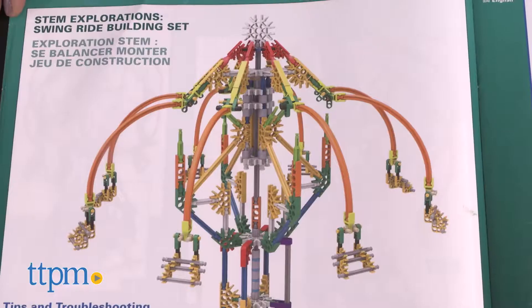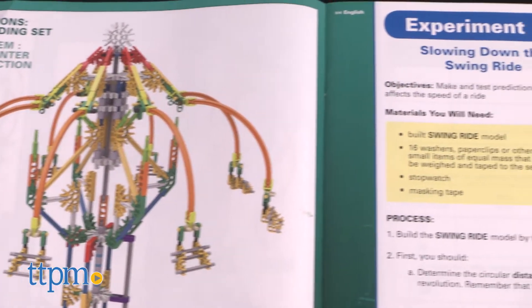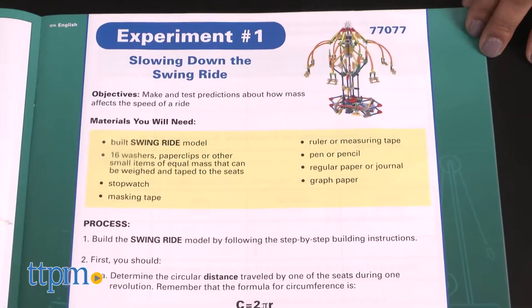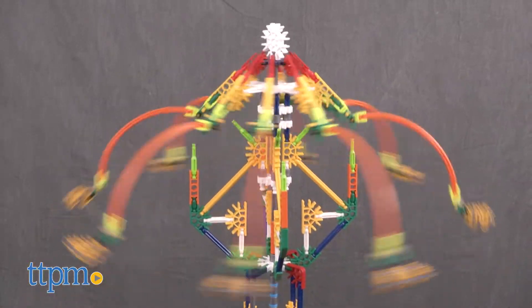Three building experiment instructions are included so kids can build, take apart and rebuild their creations. The theme here is a swing ride and we built one of our favorite rides, the swing.